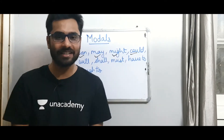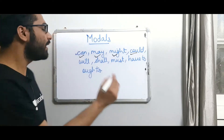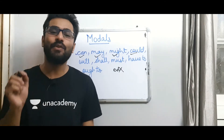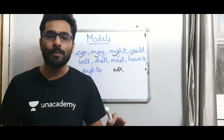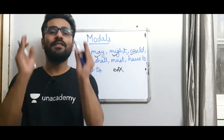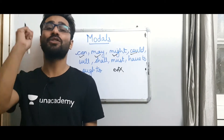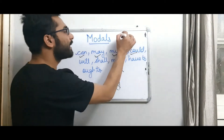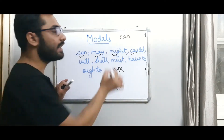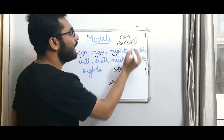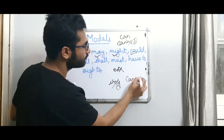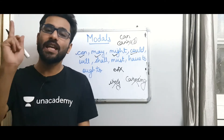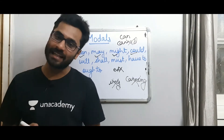First, let's understand the important characteristics of modal verbs. Modal verbs never have an -ed form and never have a V2 or V3 form — they only exist in their first form, the V1 form. Second, modal verbs never take -ing. For example, 'can' always stays 'can' — it can never be 'canned' or 'canning'. Remember, modal verbs have just one form — the first form — and they don't take -ing.